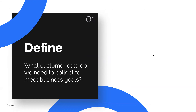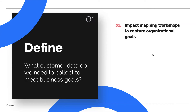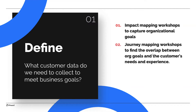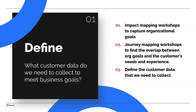First is Define. When we're doing definition work, we're trying to answer the question: which customer data do we need to collect to meet business goals and gain a real understanding of the audience? The work is conducting impact mapping workshops to surface and capture those organizational goals, journey mapping workshops to connect those goals to customer data needed to meet the goals, and creating data dictionaries to help us define the exact customer data that we need to collect. The outcome is a clear understanding and articulation of your business goals and a common understanding inside your team of how those goals align with your customer needs and the audience data that you have.